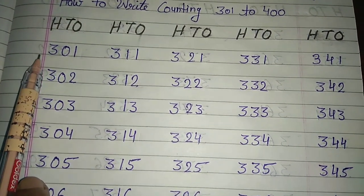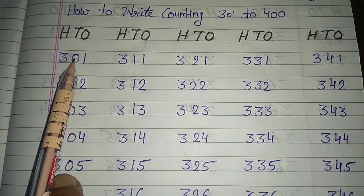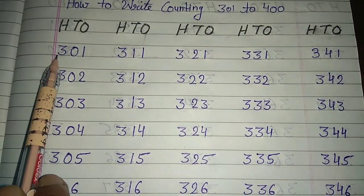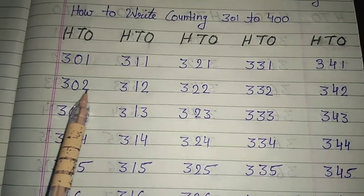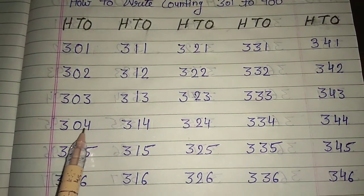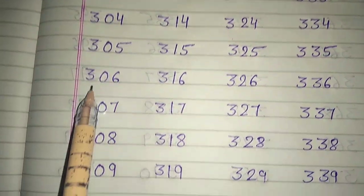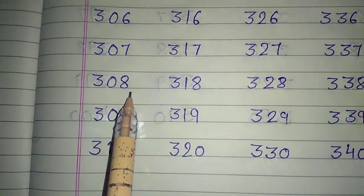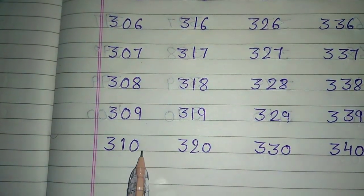So first you write down 300: 3 hundreds, 0 tens, and 1 one means 301. Then 302, 303, 304, 305, 306, 307, 308, 309, and 310.